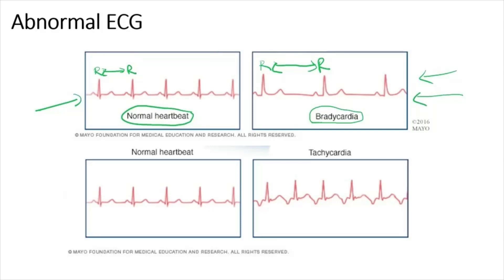Another reason for bradycardia is that impulses are not transmitted from the atria to the ventricles. When bradycardia occurs and the heart rate is less than 60 beats per minute, the heart is not able to pump enough blood, and this leads to heart failure.